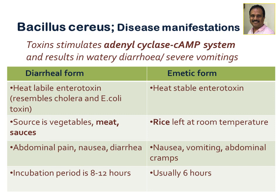The diarrheal form is produced by the heat-labile enterotoxin, which resembles cholera toxin and E. coli toxin. The source is vegetables, meat, and sauces, with clinical features of abdominal pain, nausea, and diarrhea after an incubation period of 8 to 12 hours. The emetic form is caused by the heat-stable enterotoxin with a shorter incubation period of 6 hours. The main source is rice left at room temperature — if rice is left for more than 12 hours at room temperature, it can become contaminated and cause nausea, vomiting, abdominal pain, and cramps.